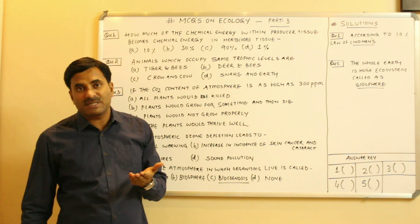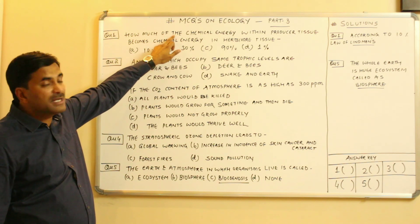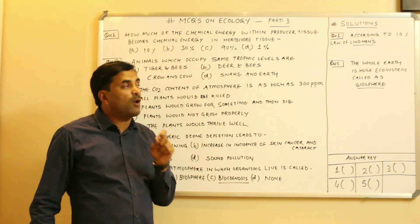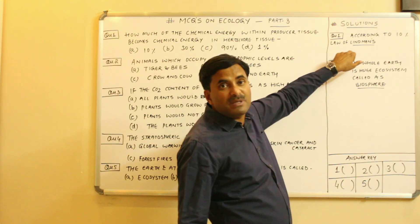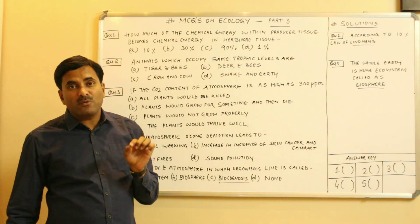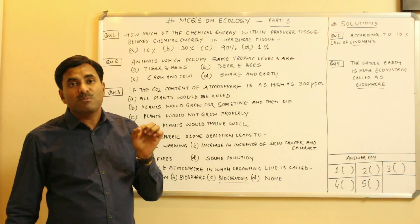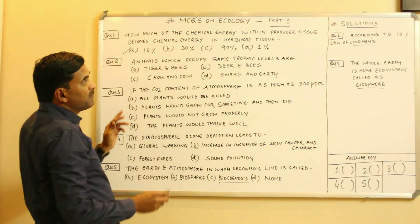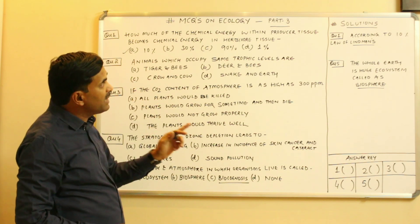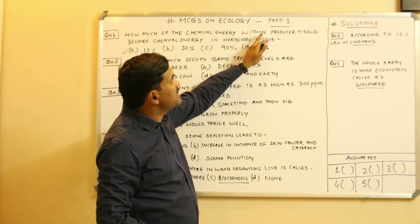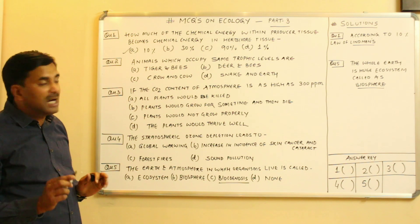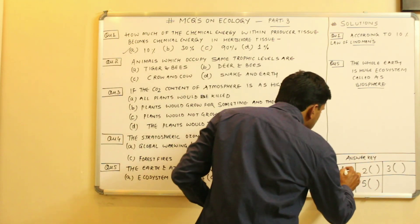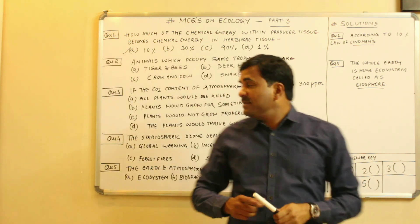The question is how much chemical energy within the producer tissue becomes chemical energy in the herbivore tissue. Here, the 10% law of Lindeman is applicable, which states that only 10% of the energy moves from the previous trophic level to the next. So the answer to question one is 10%, according to Lindeman's 10% law — answer A.